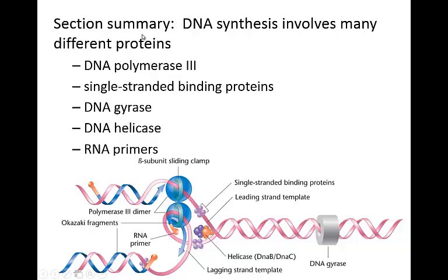The important enzymes you need to know for DNA synthesis are: DNA Polymerase 1, responsible for laying down the tracks of DNA by attaching nucleotide to nucleotide. Single-stranded binding proteins are important for destabilizing the helix and separating the two strands. DNA helicase is important for unwinding the DNA. RNA primers lay down the tracks that DNA polymerase has something to sit on and build off of. And DNA gyrase works upstream to relieve any supercoiling.